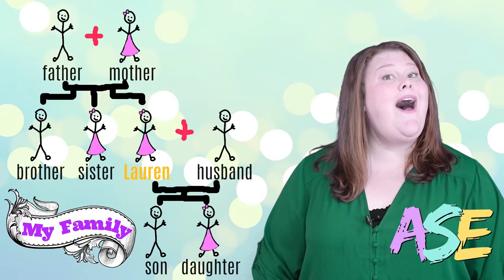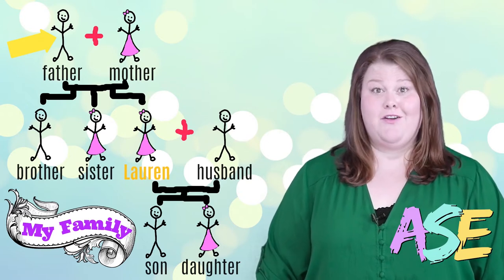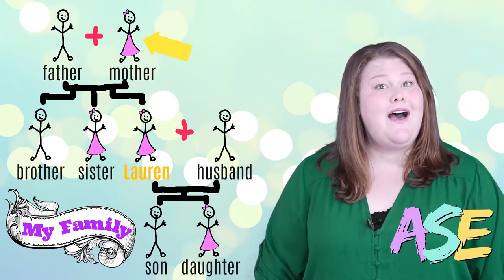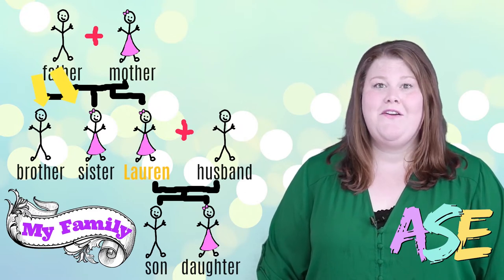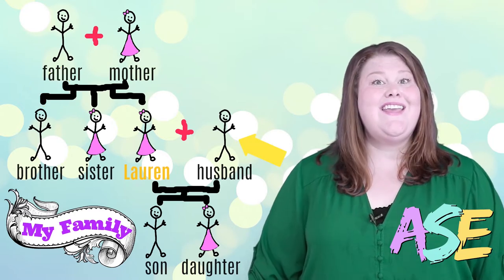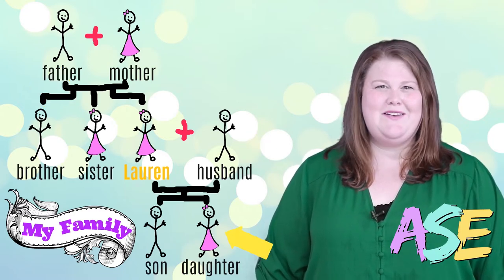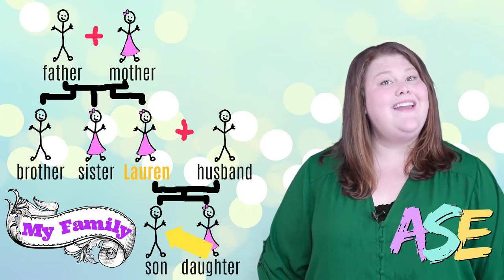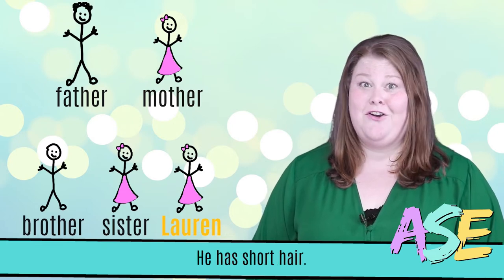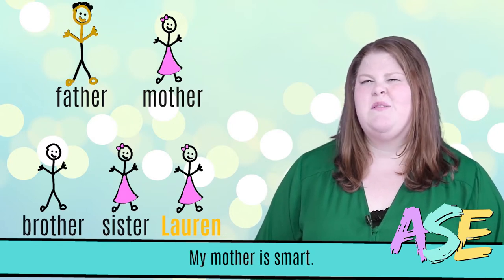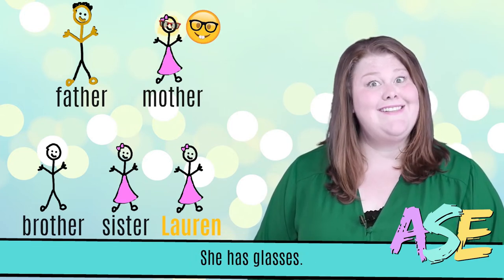This is me. This is my family. He is my father. She is my mother. They are my brother and my sister. He is my husband. She is my daughter. He is my son. My father is tall. He has short hair. My mother is smart. She has blonde hair. She has glasses.